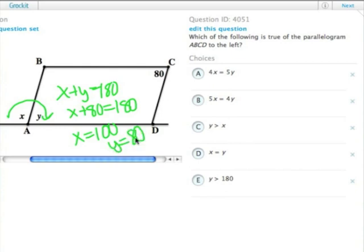Of course, we're not actually asked for either x or y in this problem. We're asked for some relationship between the two. x does not equal y, y is certainly not more than 180, y is not greater than x. We're only left with choices A and B.